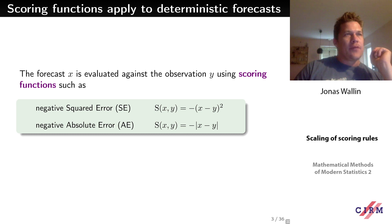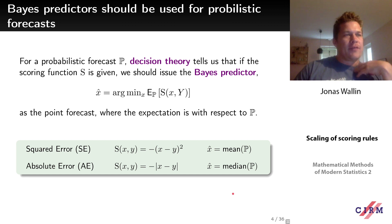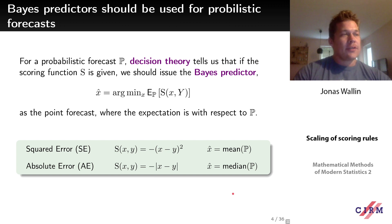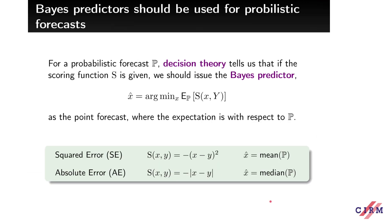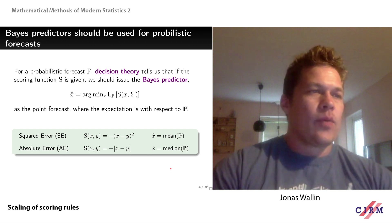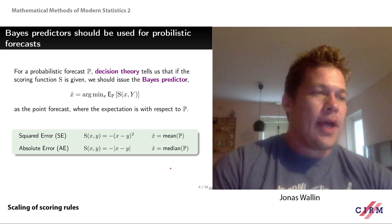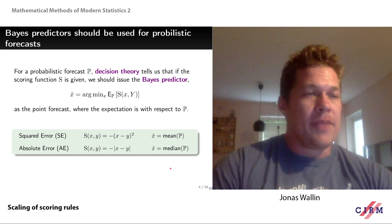We can extend this setting: instead of issuing a point forecast, we issue a predictive distribution P, called the predictive distribution. Decision theory tells us that if we use the best predictor, we take the argmin of the expectation of the scoring function under the predictive forecast. For squared error this gives the mean, and for absolute error we use the median as the forecast.